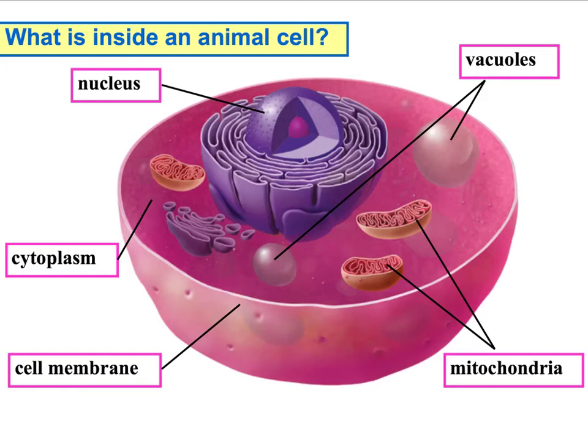The next organelle is the mitochondria. The mitochondria are little tiny power plants — they give the cell its energy. I always compare it to Popeye and his spinach: whenever Popeye needed energy, he quickly ate his spinach and had the strength to keep going. The mitochondria give the cell its energy to keep going. Cells that require lots of energy, like muscle cells, usually have a lot of mitochondria.